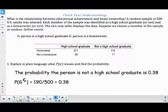Now explain in plain language what the probability of G complement means and find the probability. So this is not G, so the person is not a high school graduate. So that's going to be 0.38, 190 out of 500.